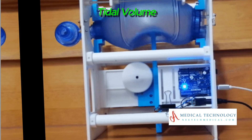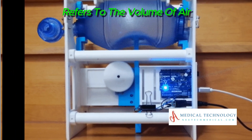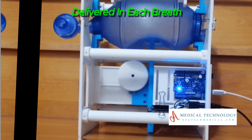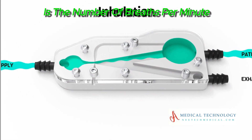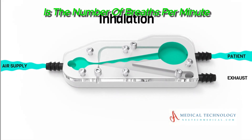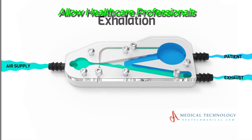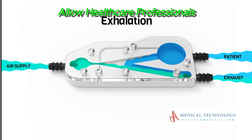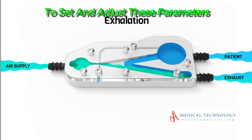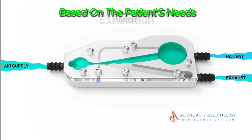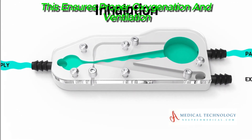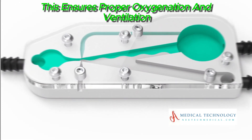Tidal volume refers to the volume of air delivered in each breath, and the respiratory rate is the number of breaths per minute. Ventilators allow healthcare professionals to set and adjust these parameters based on the patient's needs, ensuring proper oxygenation and ventilation.